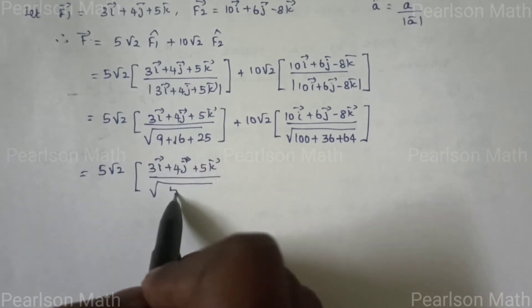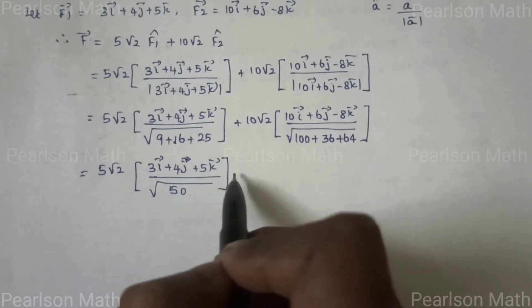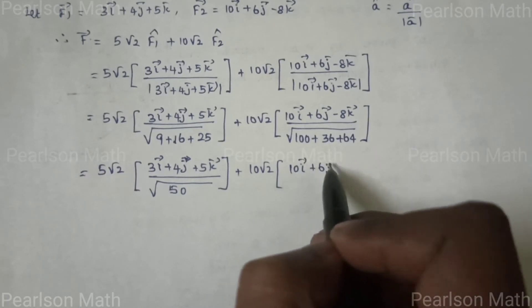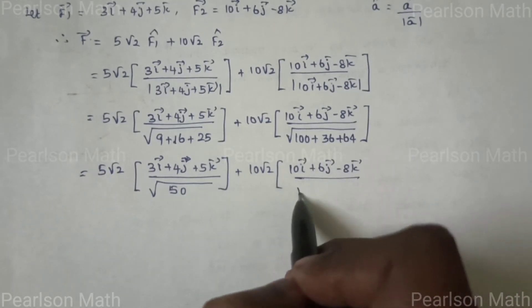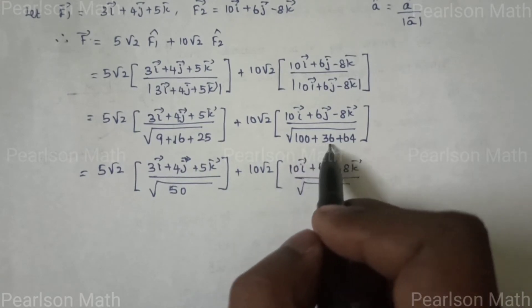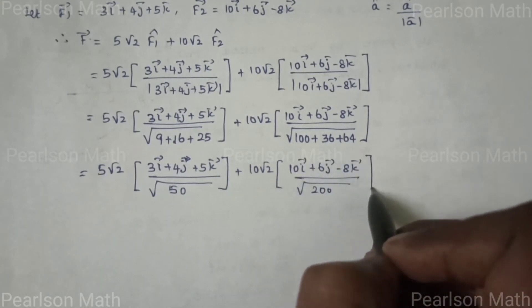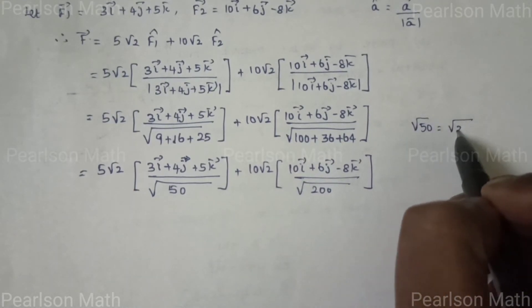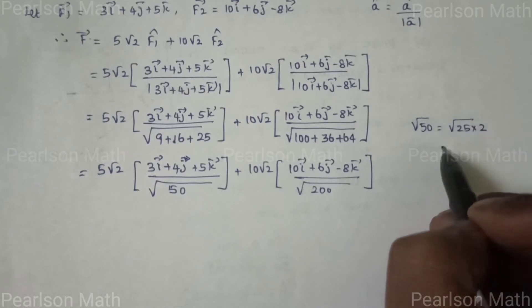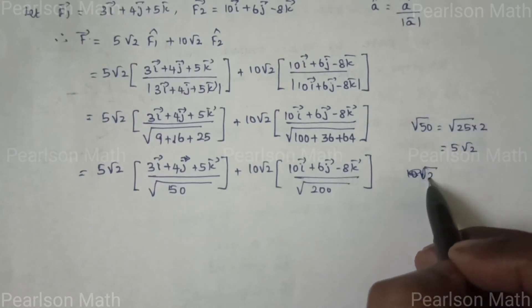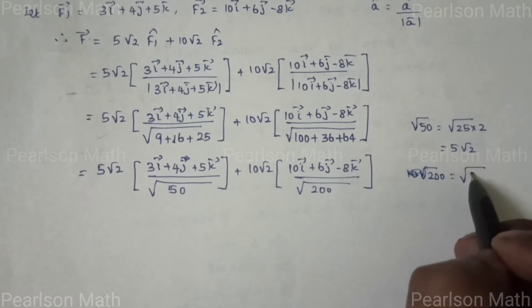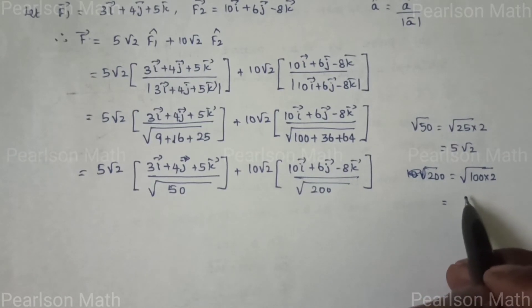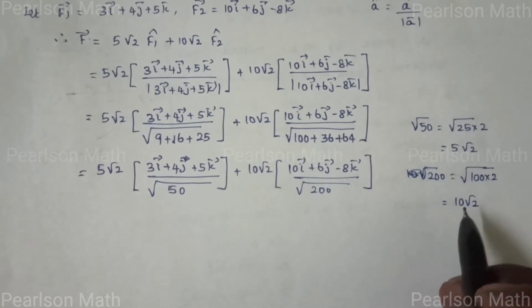Simplifying: √50 = √(25 × 2) = 5√2, and √200 = √(100 × 2) = 10√2. So 5√2 / 5√2 = 1 and 10√2 / 10√2 = 1.